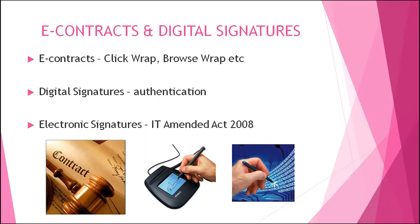E-contracts for businesses come in three formats: click-wrap, shrink-wrap, and browse-wrap. Click-wrap is when you click 'I agree' or 'I accept.' Shrink-wrap occurs when you purchase CDs or DVDs — for example Microsoft Office or antivirus tools — and agree to the terms printed on the back of the CD. Browse-wrap applies when you browse websites, download mobile applications, or use platforms where terms and conditions govern use.